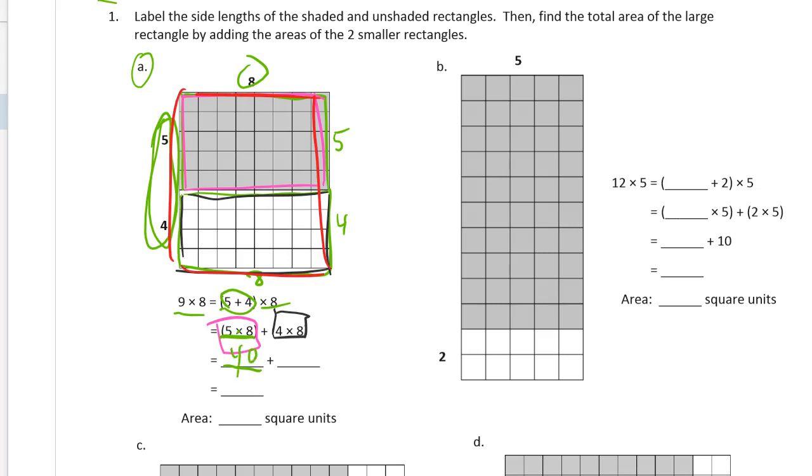So that's 40. And this 4 times 8 is 32. And so what goes here is 40 plus 32, and those are pretty easy digits to do mentally. 72. So it's 72 square units.